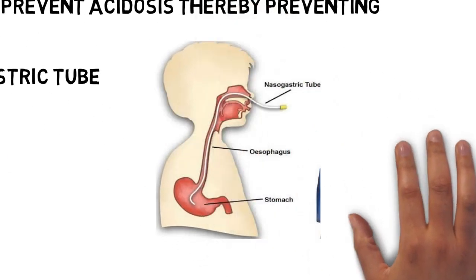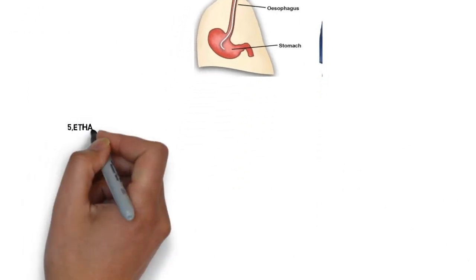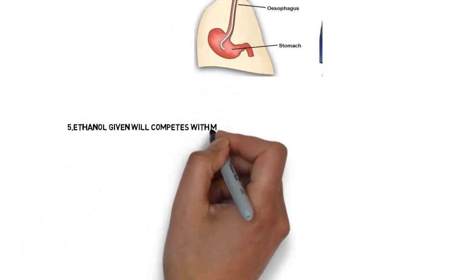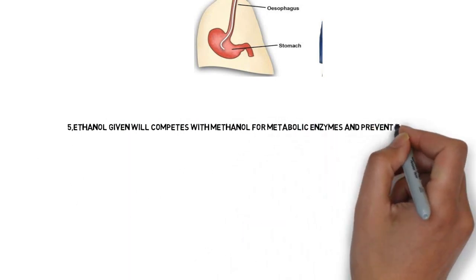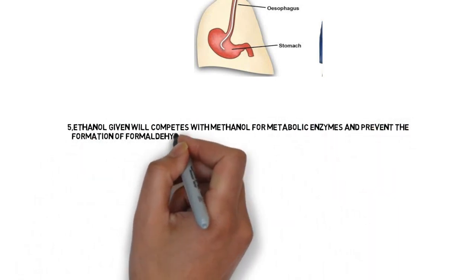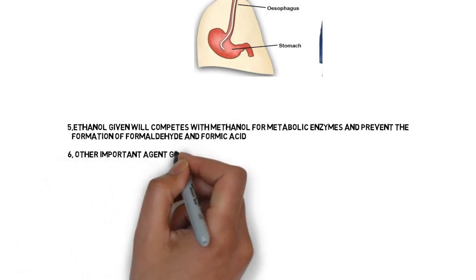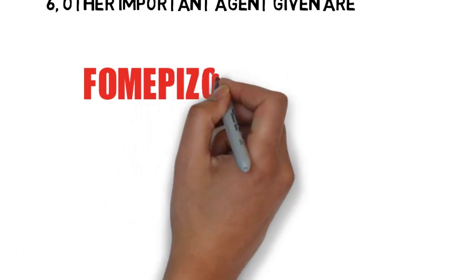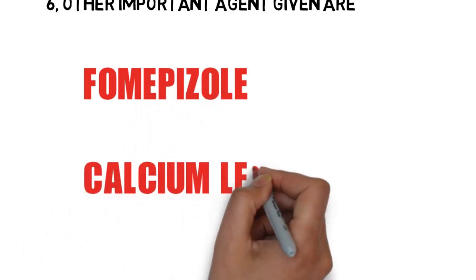Ethanol is given through a nasogastric tube. Ethanol competes with methanol for metabolic enzymes and prevents the formation of formaldehyde and formic acid. Other important agents given are fomepizole and calcium leucovorin.